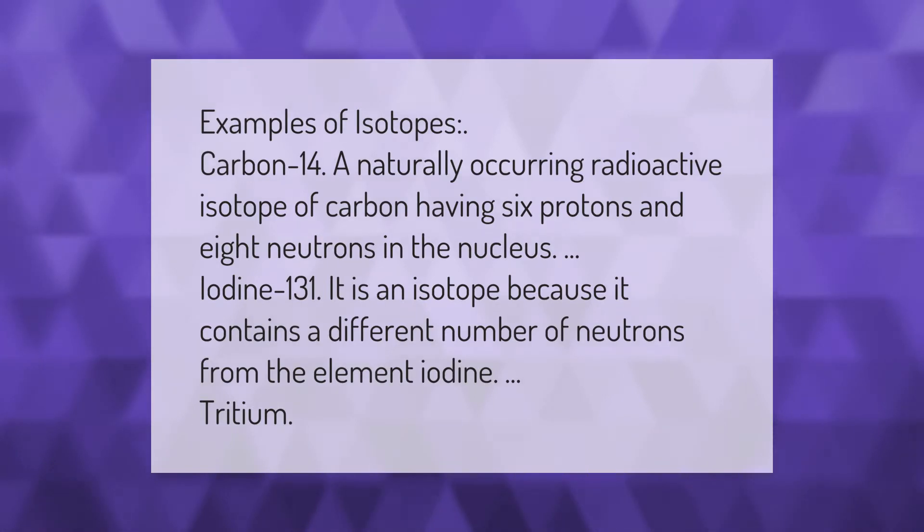Examples of isotopes: Carbon-14, a naturally occurring radioactive isotope of carbon having six protons and eight neutrons in the nucleus. Iodine-131, it is an isotope because it contains a different number of neutrons from the element iodine. Tritium.